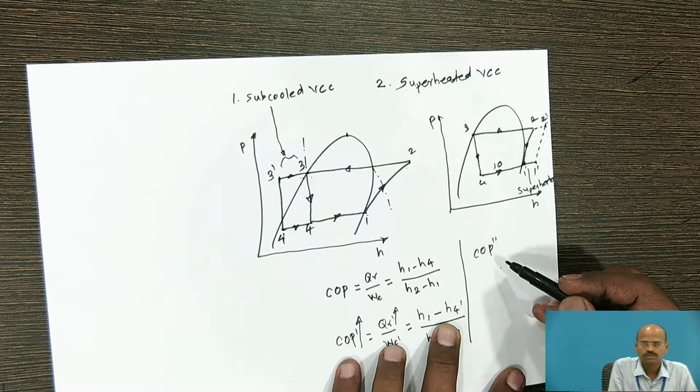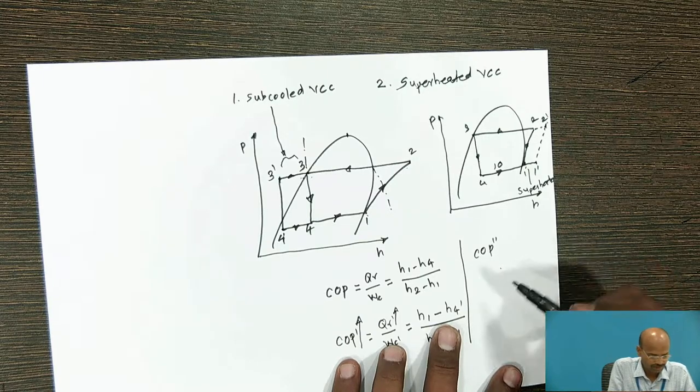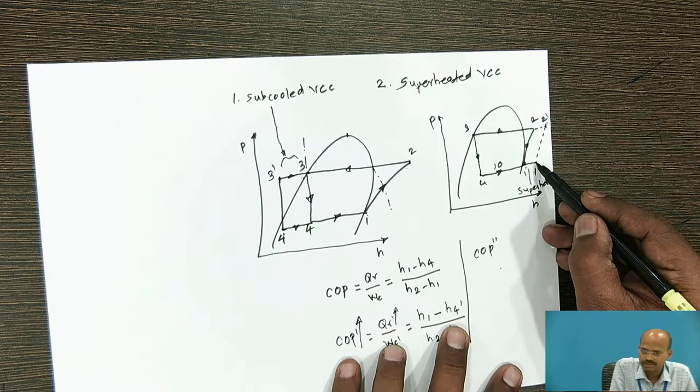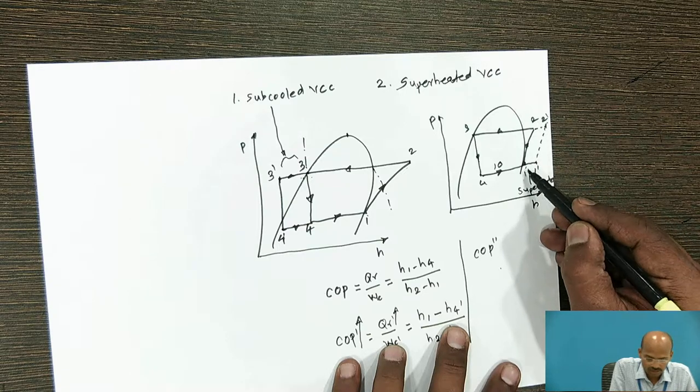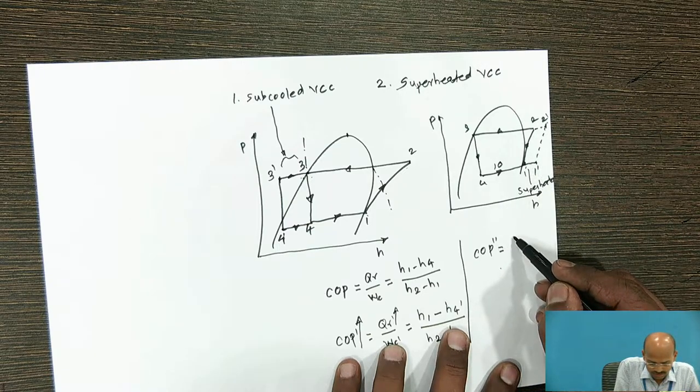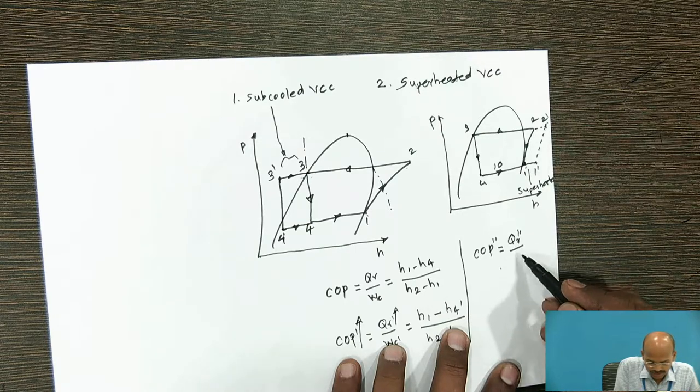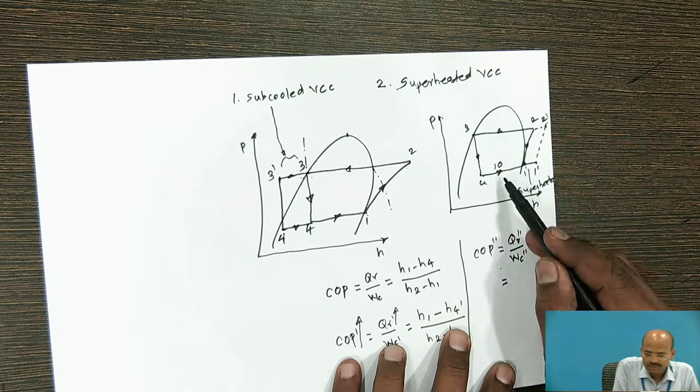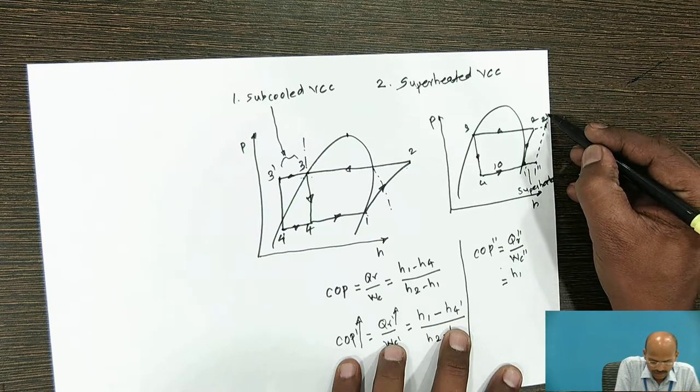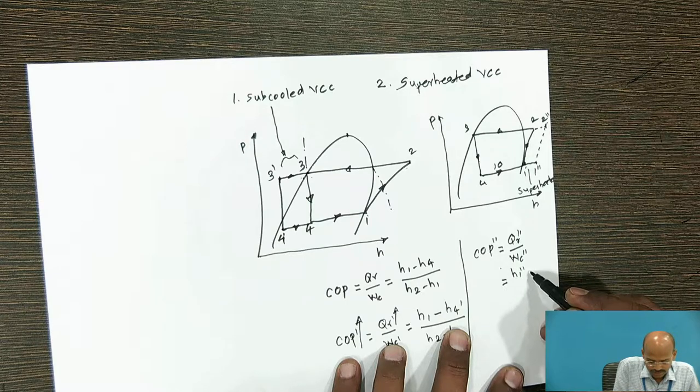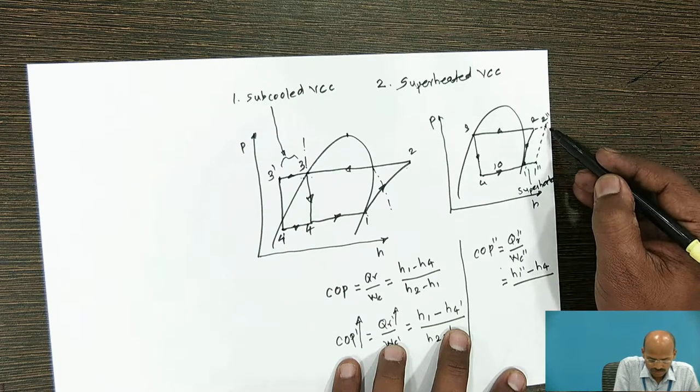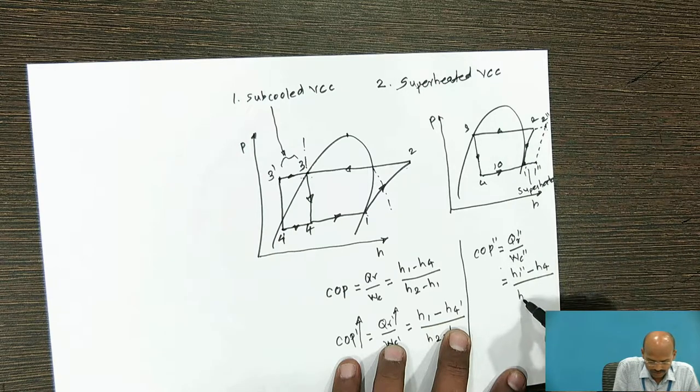Let COP double dash denote the change in the COP. This was the theoretical COP. Now by superheating the vapor refrigerant before entering to the compressor isobarically, the change will be QR double dash divided by WC double dash. Now here new refrigerating effect is H1 double dash minus H4. This is the change in the refrigerating effect to actual work, that is H2 double dash minus H1 double dash.